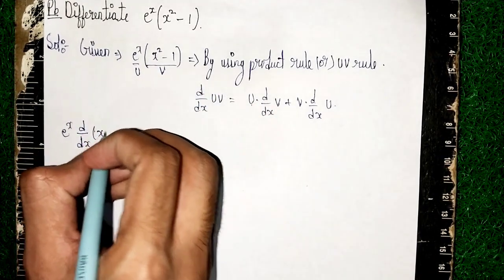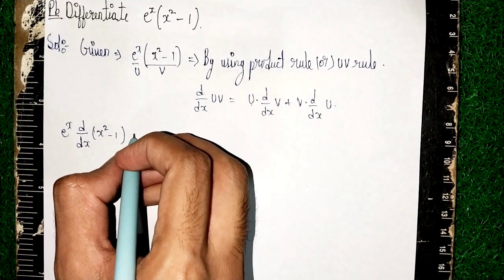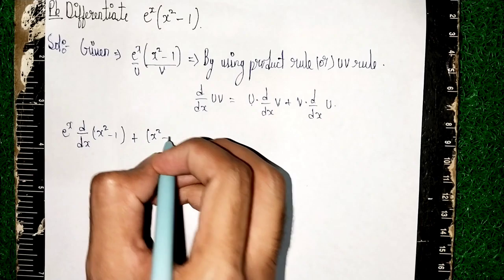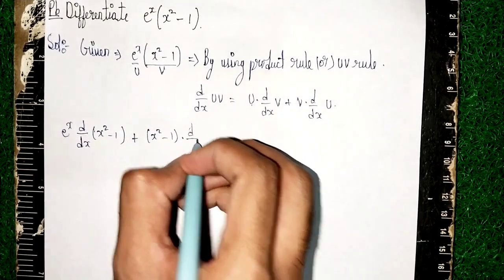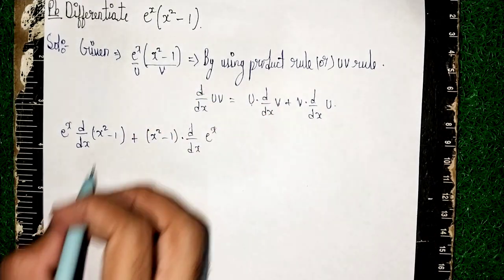Then plus, then again x^2 - 1 and into d/dx of e^x. u is what? e^x. Now here separate the differentiator.